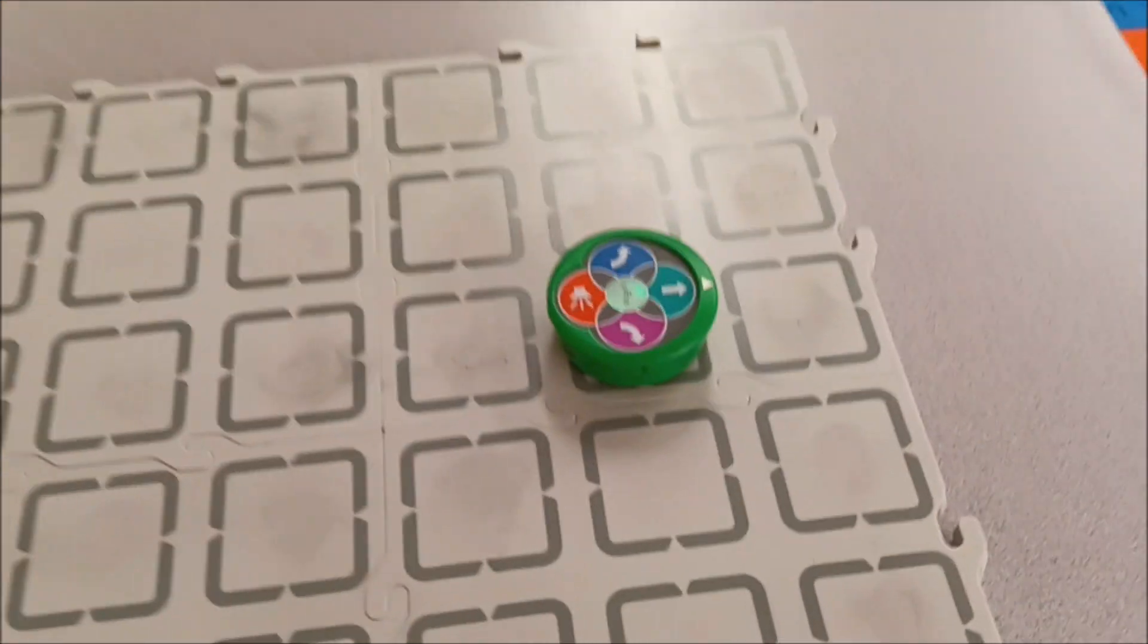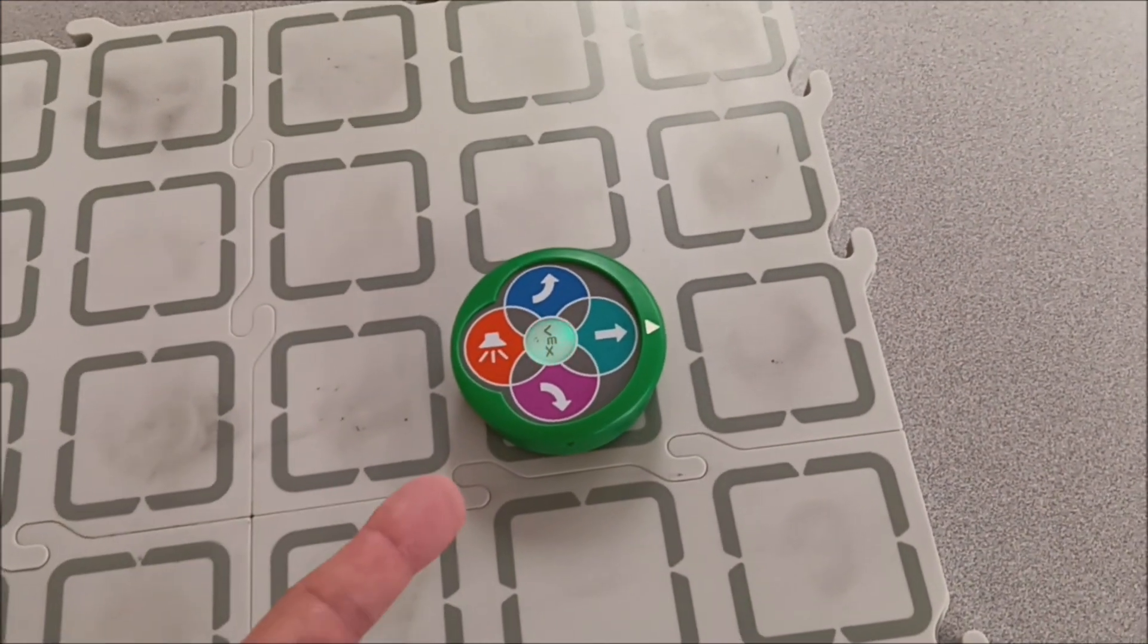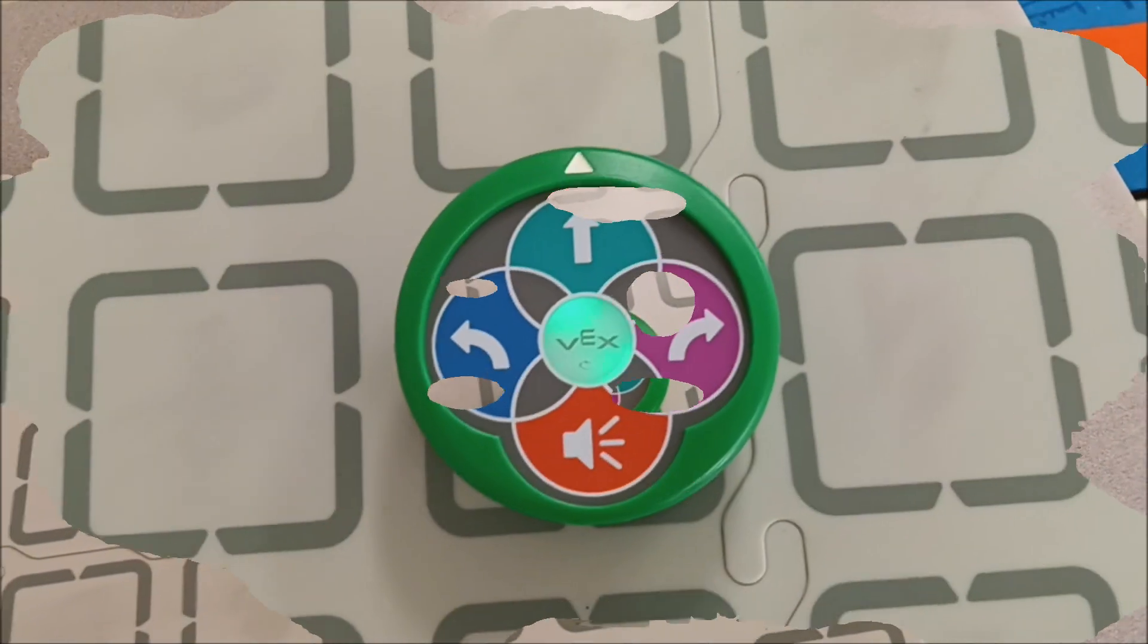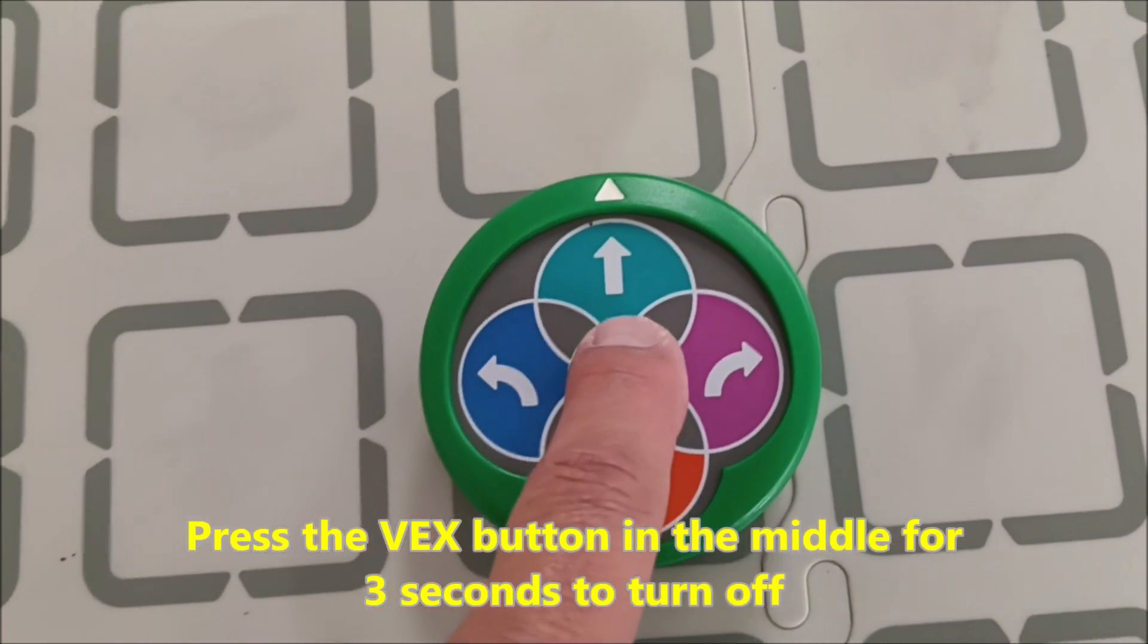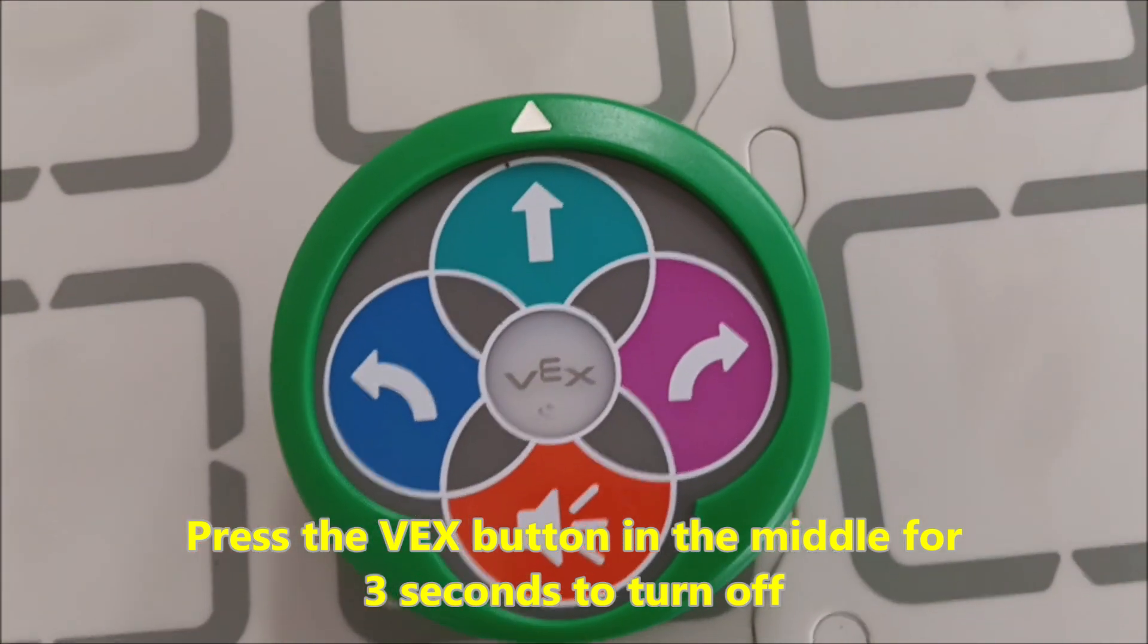But today, that's basically it. Just getting you started, turning it on, turning it off, clearing the program, and the basic controls of the VEX-123 robot. If you want to turn this off, you'll just long press this start button. And it should turn off.